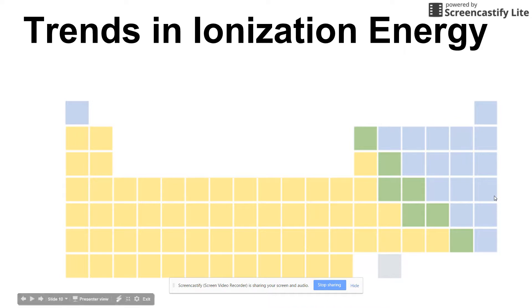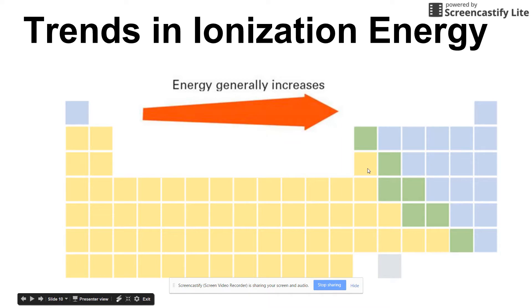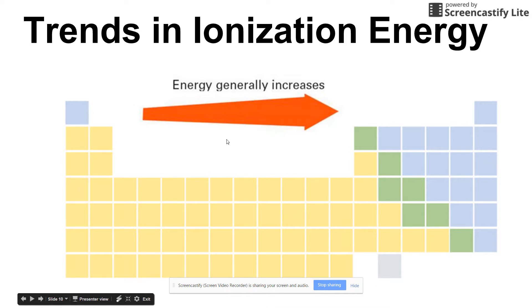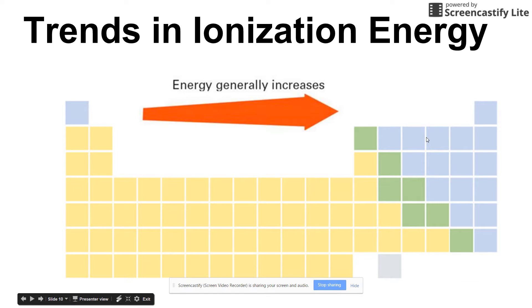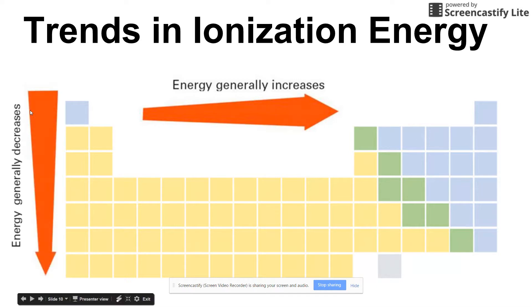Applying it to the periodic table: as you move left to right, ionization energy is generally increasing because atomic radius is doing the opposite — it's decreasing. The outermost electron is closer to the nucleus, the attraction is much stronger, and it requires more energy to remove that electron. As you move from top to bottom, ionization energy is generally decreasing because the atomic radius is increasing, so the outermost electron is further from the nucleus, the attraction is weaker, and it takes less energy to remove it.